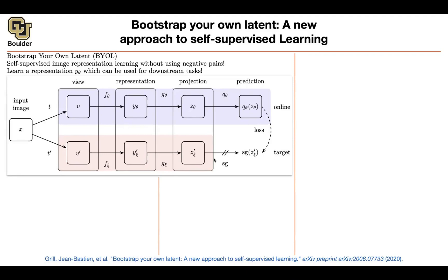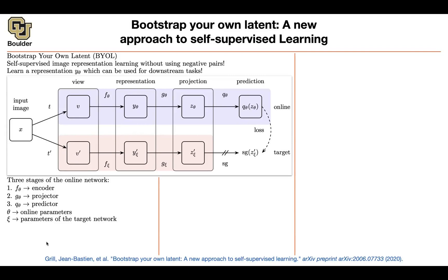You apply stop gradient here, and this way you are bootstrapping your own latent. In more detail: fθ is your encoder, gθ is your projection network or projector, and q is a predictor — this is the additional component compared to contrastive learning. So you have an additional neural network. θ parameters are trained, while ξ, the parameters of the target network, are an exponential moving average of θ, so they lag behind.